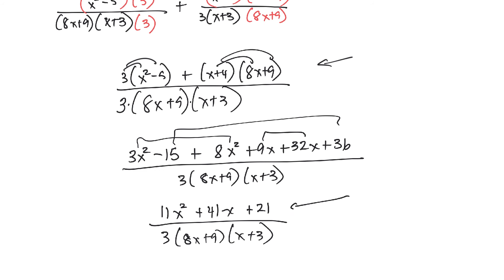Now, at this point, you could take a look at the top and see if you could factor it. Because if you could factor it, and then you have all this stuff on the bottom, if there were any two factors on the top and the bottom that were the same, I could cancel them. But I look at 11x squared and 21, and I don't think there's any way I'm getting that.